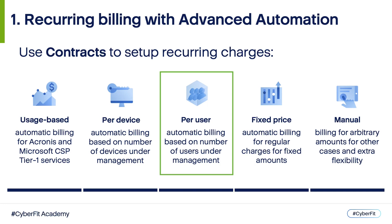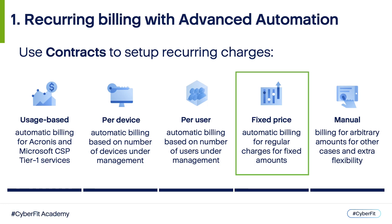Per Device Billing allows you to bill based on the number of registered client devices. Advanced Automation provides an overview of all devices under your management covered with Acronis CyberProtect, Advanced Management, or supported third-party RMM systems. Per User Billing allows you to automatically bill based on the number of active users under your management. Once you submit your client base to Advanced Automation, you can use this data to sync service quantities as well.